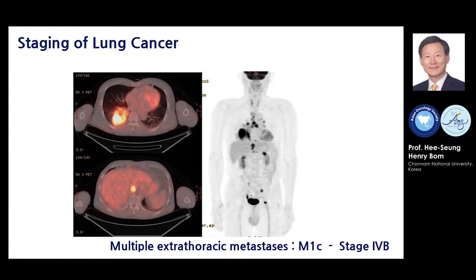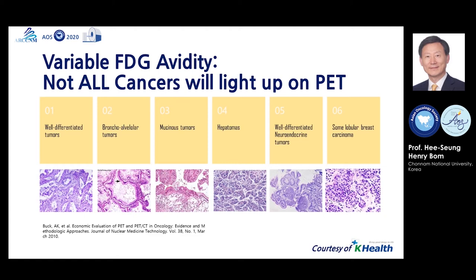Many tumors show variable FDG avidity. Not all cancers will light up on PET. This slide shows examples of non-FDG avid cancers: well-differentiated tumors, bronchoalveolar lung cancer, mucinous cancer of the stomach, hepatocellular carcinoma, well-differentiated neuroendocrine tumors, and some lobular breast carcinomas do not take up FDG.